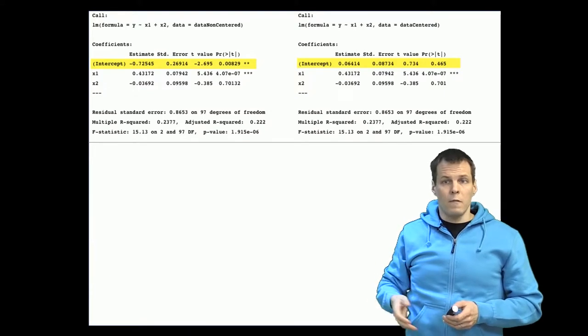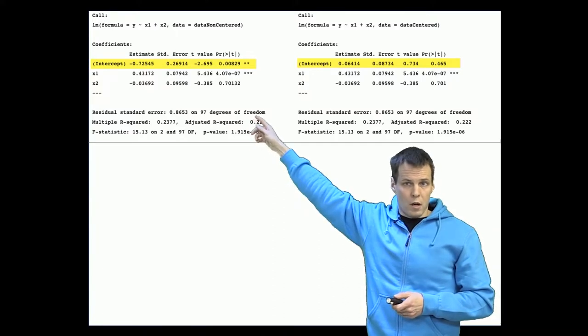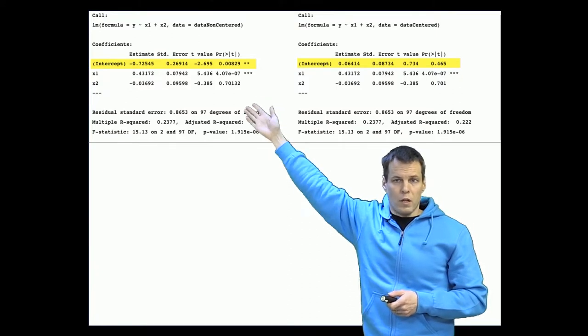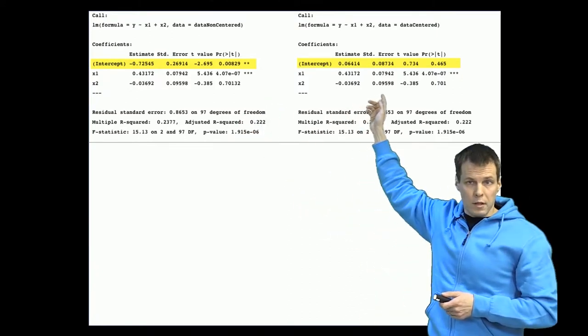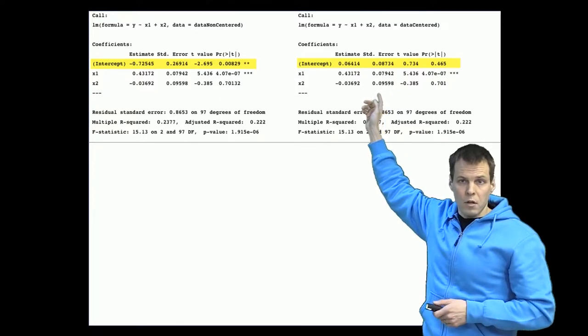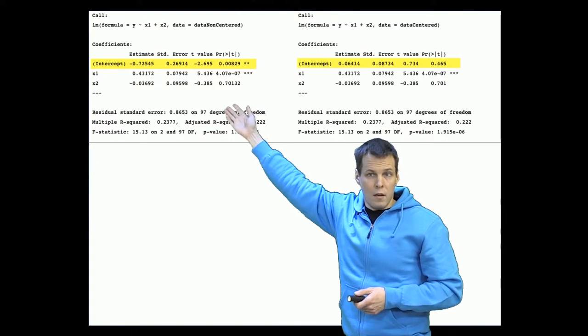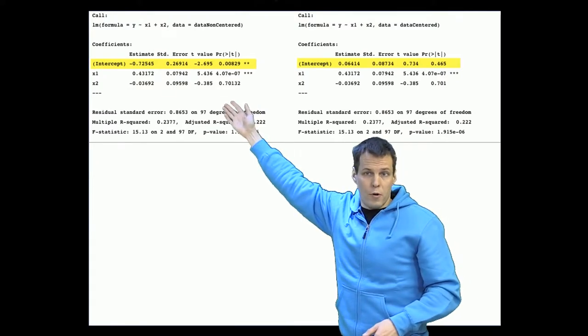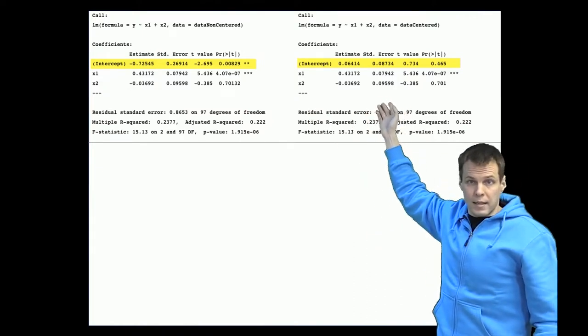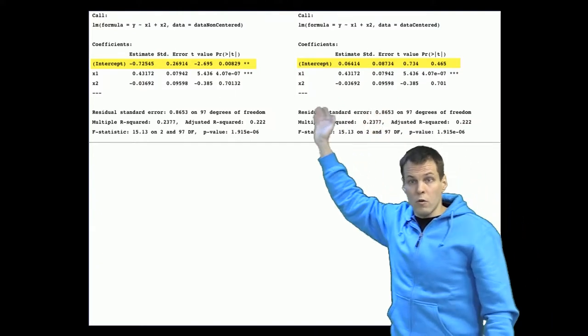The downside of centering is that once we calculate predictions, here the predictions for this model are on the original metric, so we will get our predictions on whatever the Y is and if we calculate predictions using this model then the predictions will be off by the amount that we centered. So for example if we're predicting our salary and let's say this model would give 10,000 euros per year then this model could give minus 2,000 euros which doesn't make sense unless we back convert or back translate that effect to the non-centered variables.